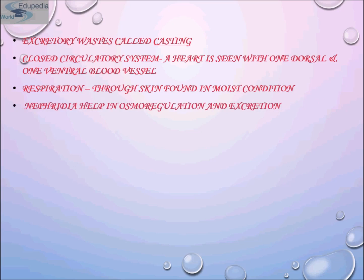In primitive annelids, each compartment of the coelom is connected to the outside by ducts for the release of sex cells, and by paired excretory organs called nephridia. These openings are closed except when functioning, thus preventing the loss of coelomic fluid. In more advanced species, both excretory and reproductive functions are sometimes served by a single type of duct, and ducts may be absent in certain segments.